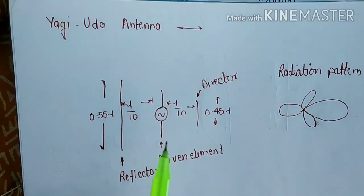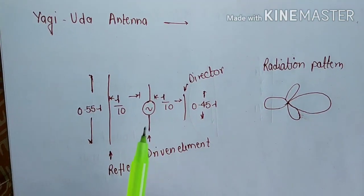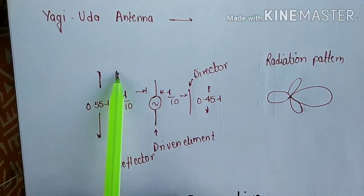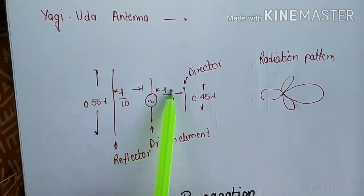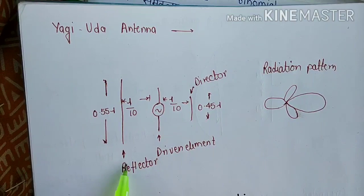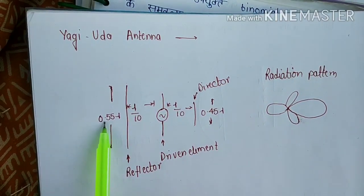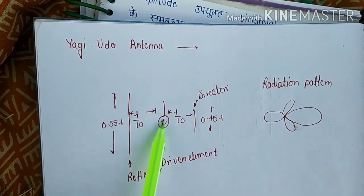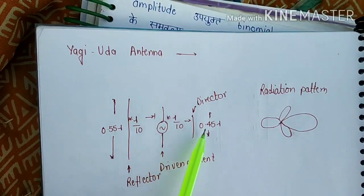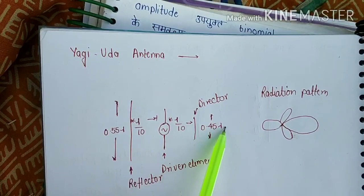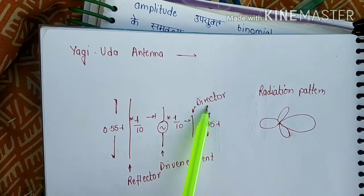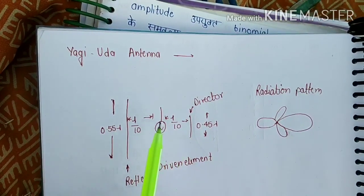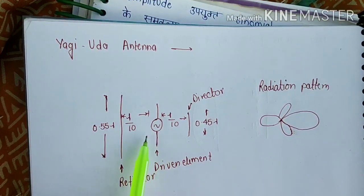Now let's talk about the Yagi-Uda antenna. In this antenna, the driven element length is approximately 0.55 lambda. There is a driven element which is fed current, and there are directors. The array is linear with the directors pointing in the direction of maximum radiation.